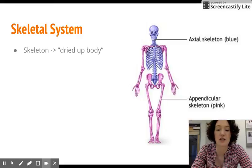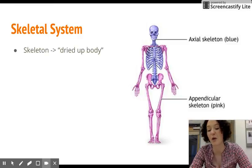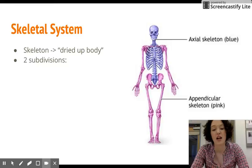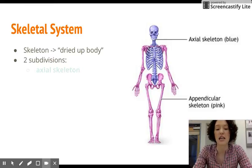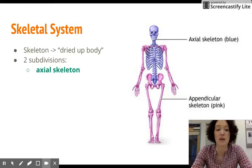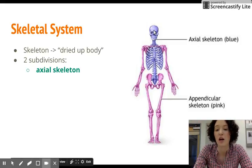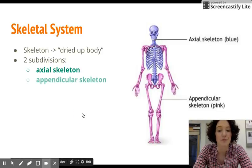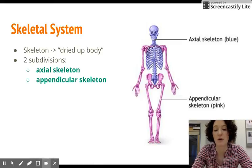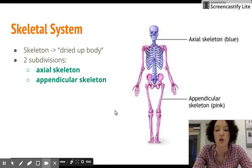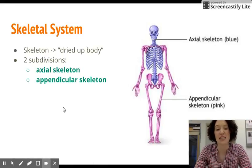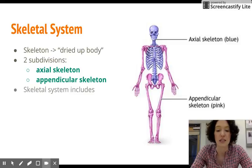Various parts of the skeletal system: the word 'skeleton' literally means 'dried up body.' It has two subdivisions. There's the axial skeleton, which includes the bones of the longitudinal axis of the body — the skull, the vertebral column, and the rib cage. Then there's the appendicular skeleton, which includes the bones of the limbs and the girdles like the pelvic girdle and the shoulder girdle, which are literally appended or attached to the axial skeleton.